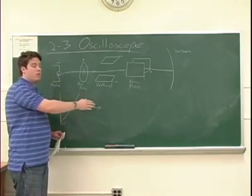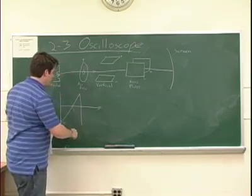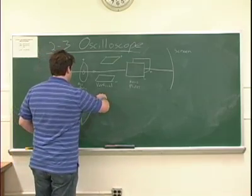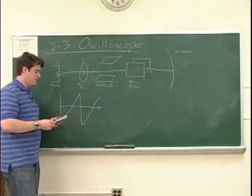Once it gets to the right, you want the beam to jump back over to the left side so this voltage drops back down to a negative value and then traces slowly up again. And this repeats on and on for as long as you need the oscilloscope to function.